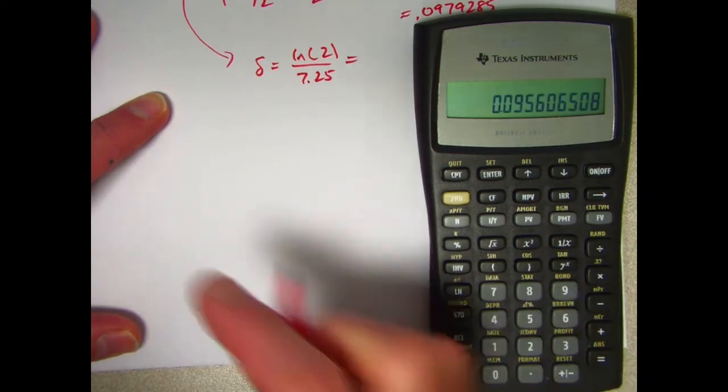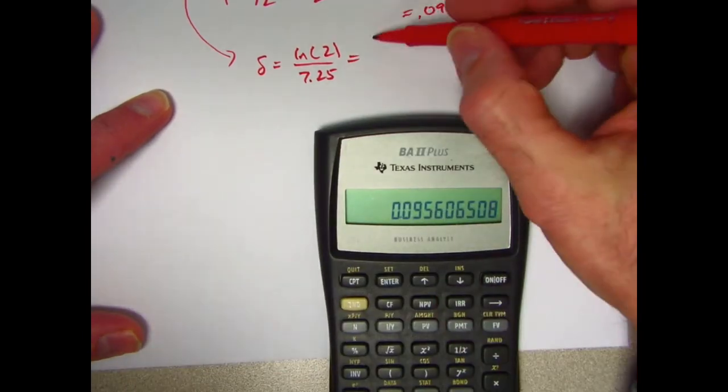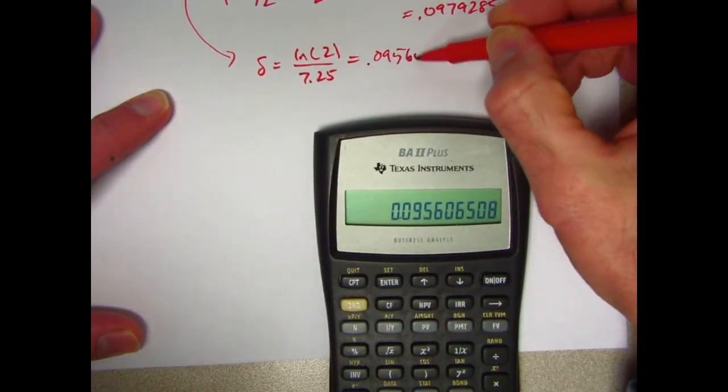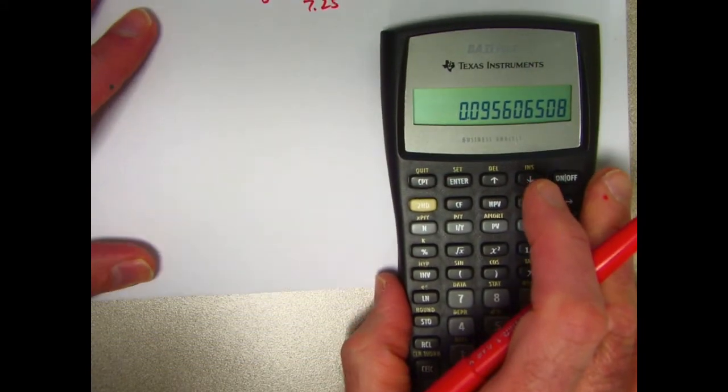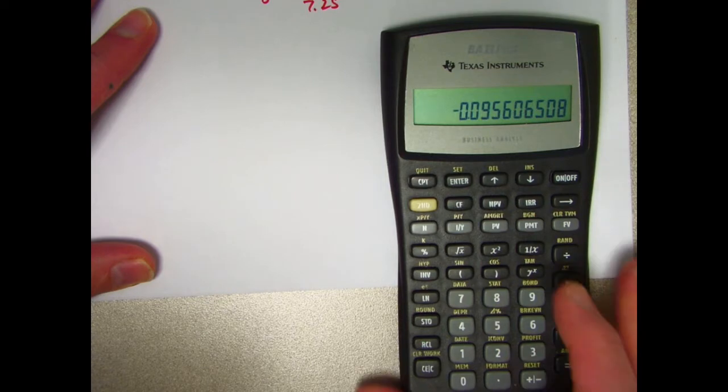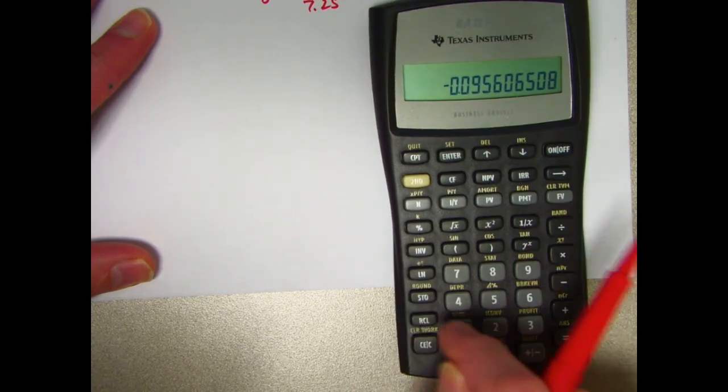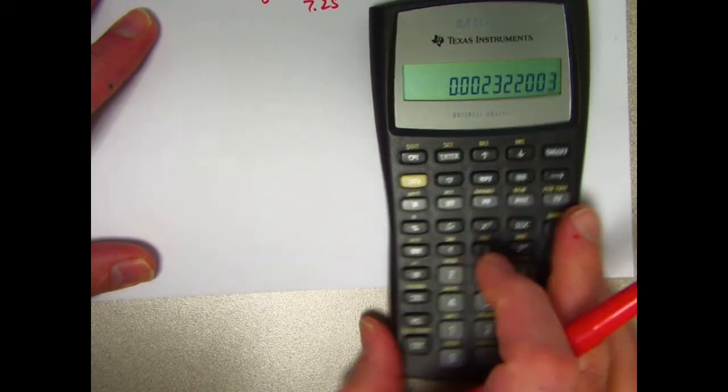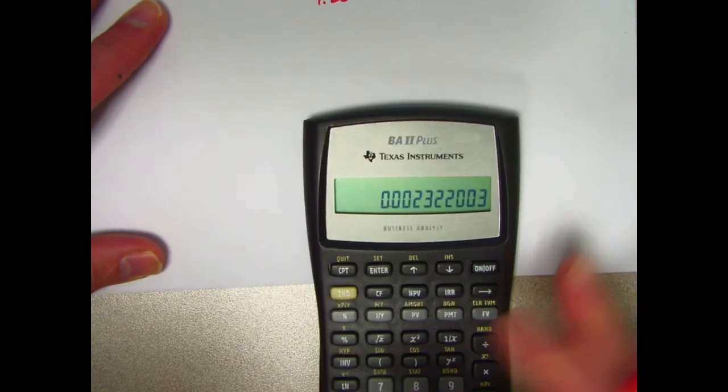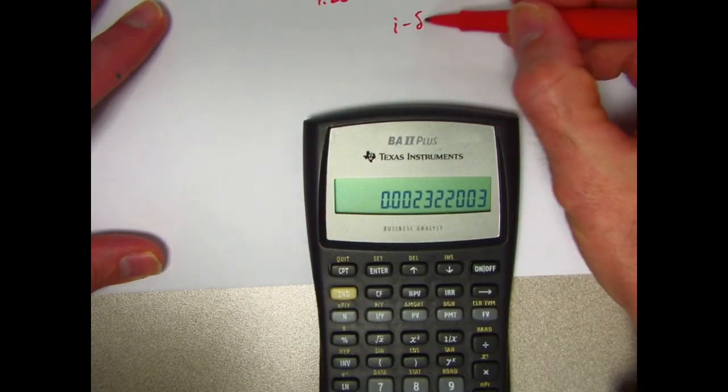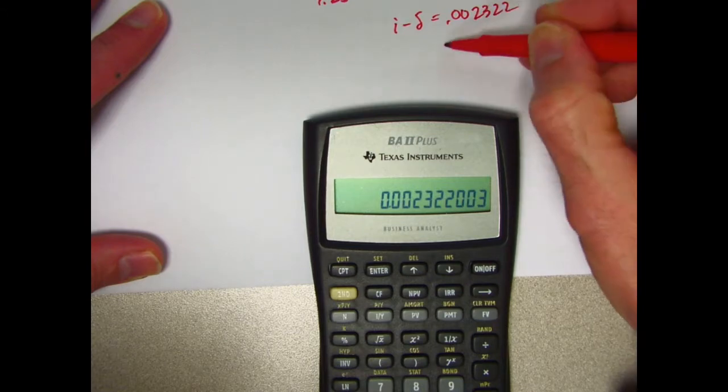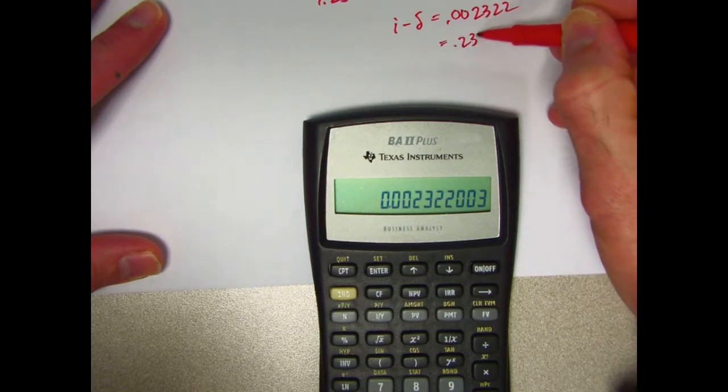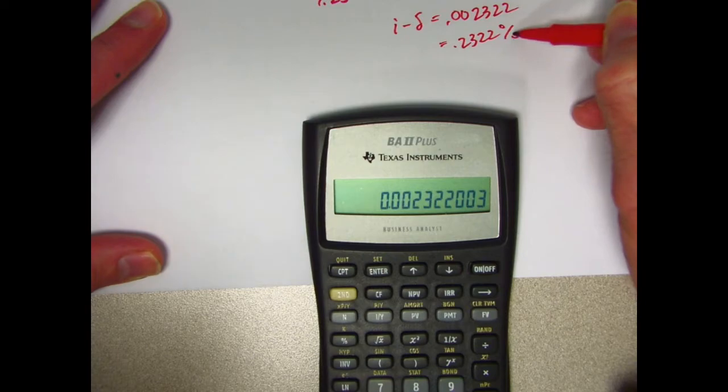We're doing i minus delta. I'll go ahead and write this down, even though we don't need to. 0.0956065. We're doing i minus delta. So I can just negate this. And add what was in register 1, which was the value of i. i minus delta. 0.002322, or as a percent, 0.2322%, and that is the correct answer.